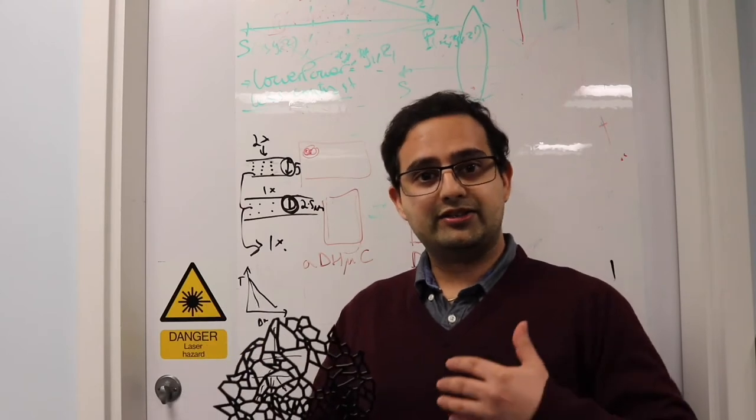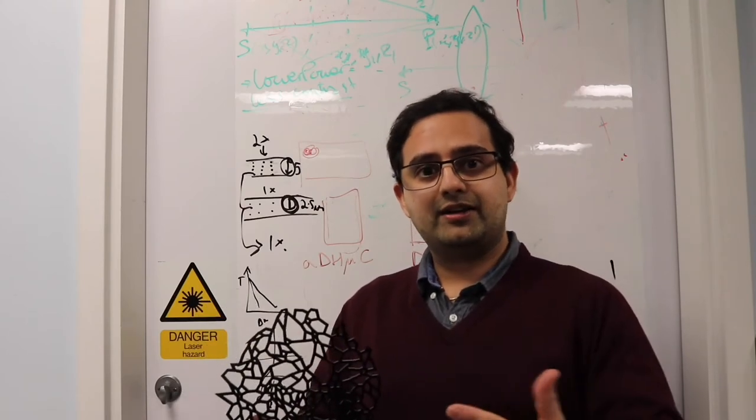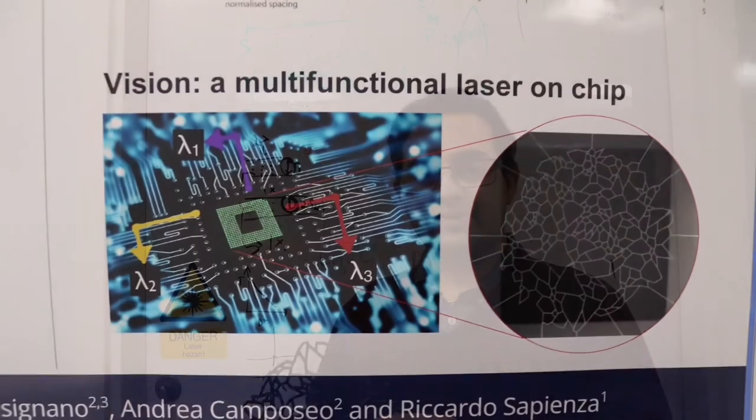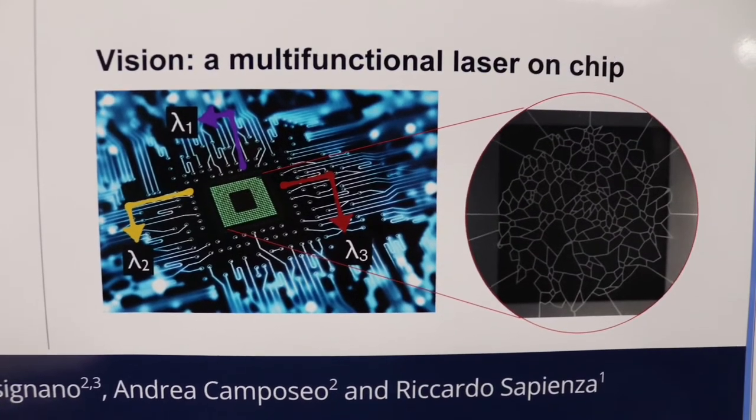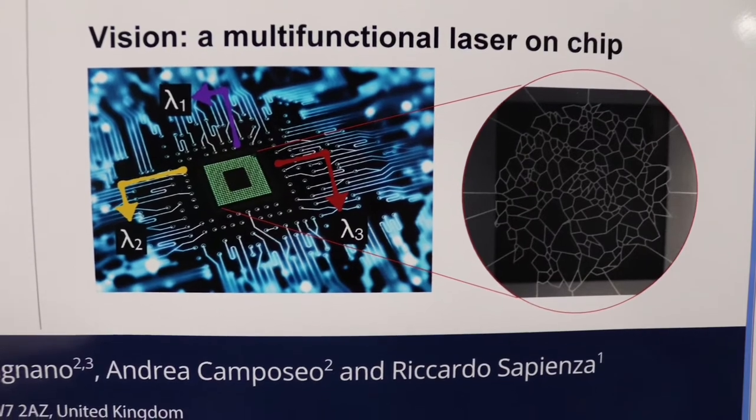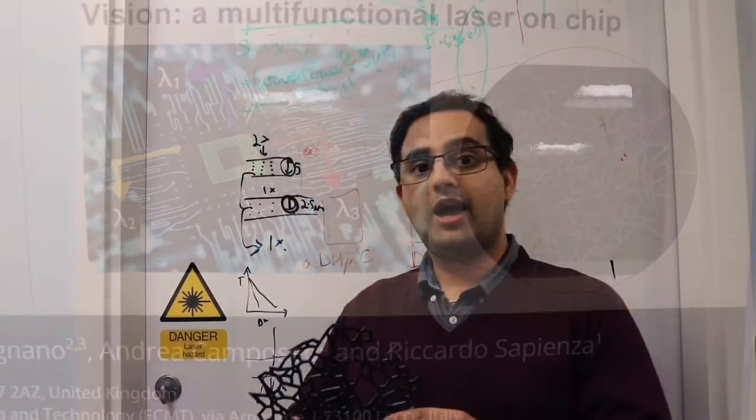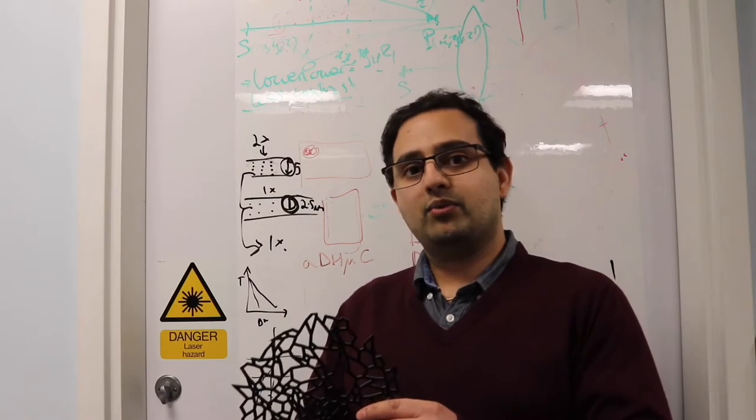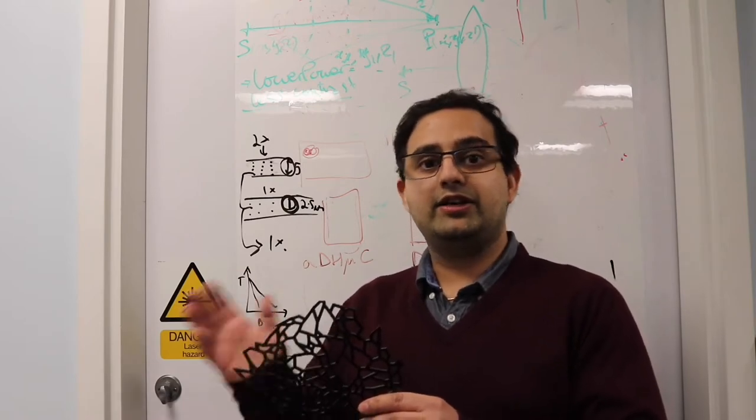We probe this by exciting through another laser and the aim is to make an integrated light source on a chip that we can control the emission of. By manipulating how we probe this laser we can make it laser at different wavelengths and send that light in different directions.